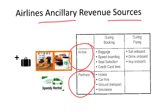If we look at the moment in the trip when this revenue is generated, we see that sometimes it's during the booking — when making a booking online the airline offers different services contributing to ancillary revenue — and other times it's while flying, with food and drink on board. So there are two phases when airlines generate this revenue.